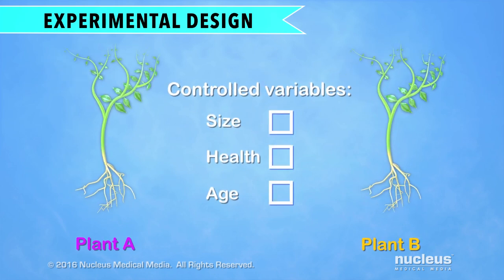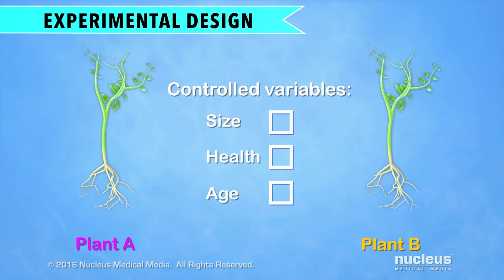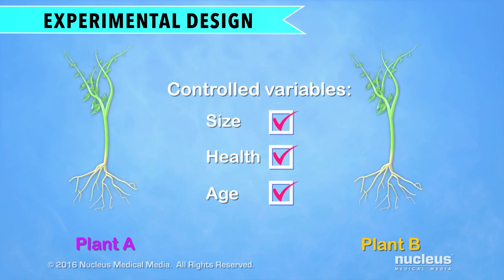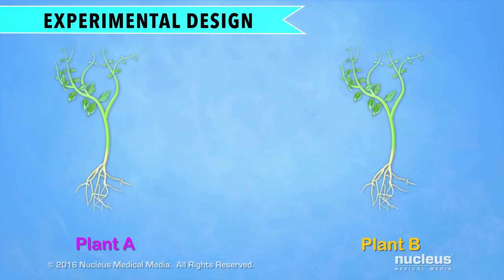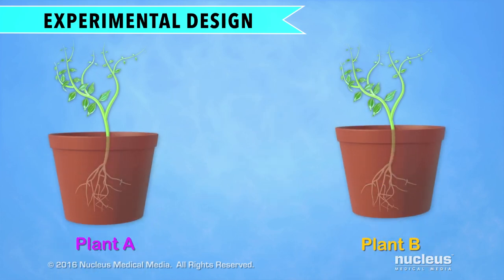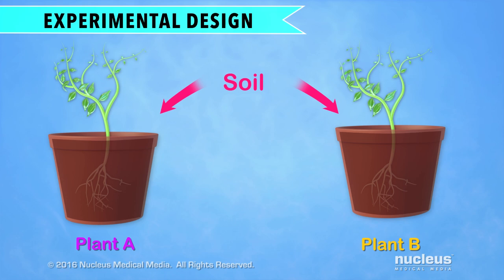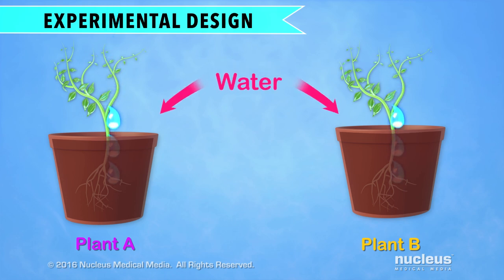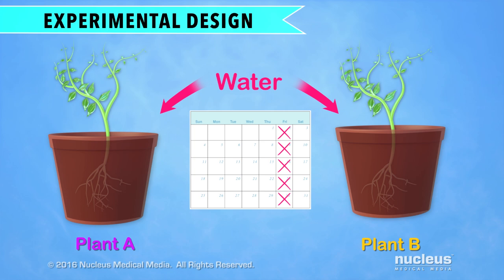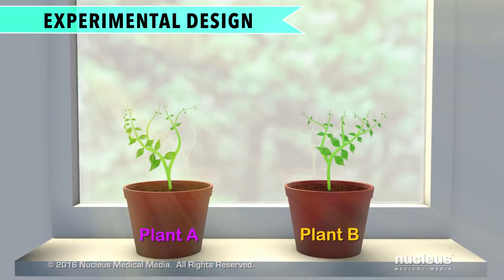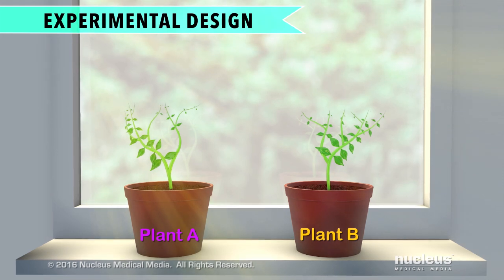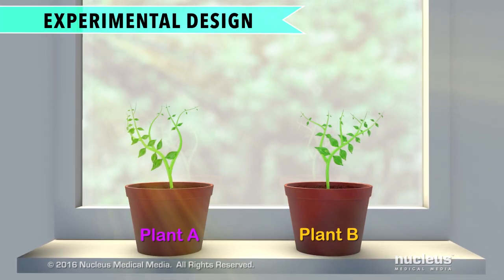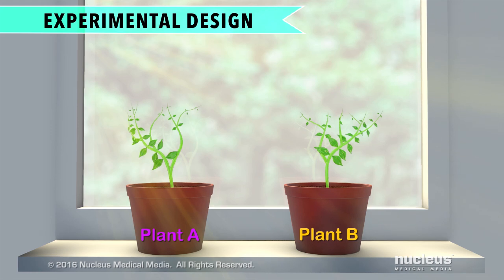Everything about the plants should be exactly the same, including their size, health, and age. Next, you would put each plant in identical pots with the same amount of the same kind of dirt or soil. You would water them both the same amount at the same times. You would also put the plants next to each other in the same place, such as a windowsill, so that they're both exposed to the same amount of sunlight and kept at the same temperature.